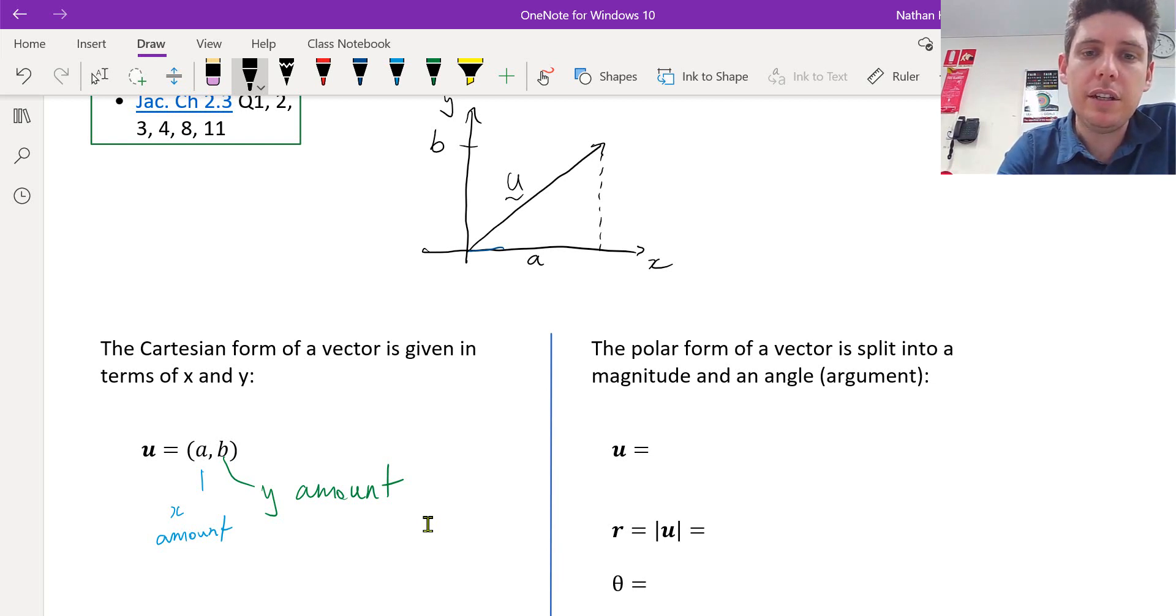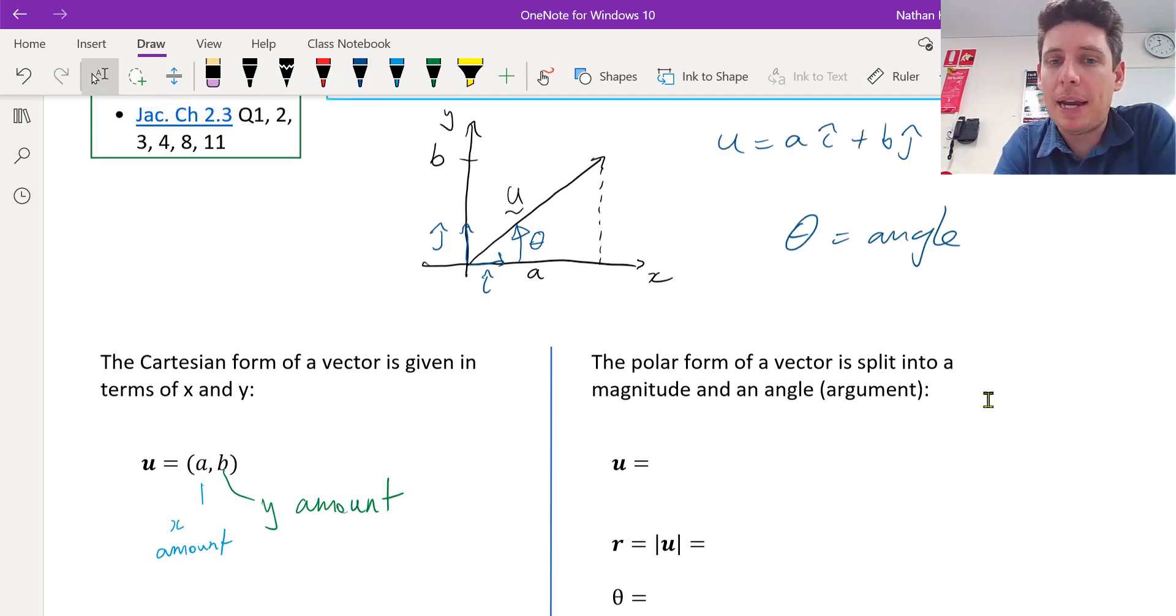So if we consider the Cartesian plane again and we start from the positive x-axis and we go anti-clockwise, we travel a certain amount called theta until we get to our vector u. This is the angle. We want the magnitude.